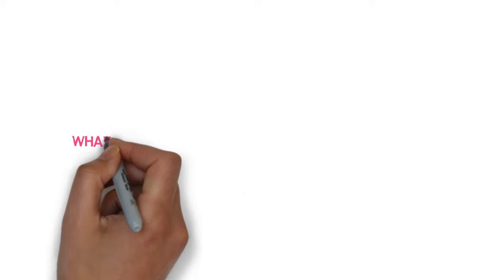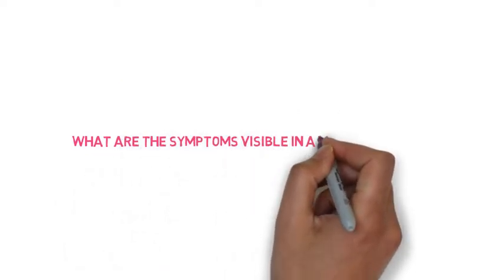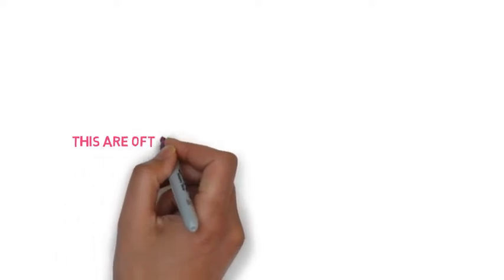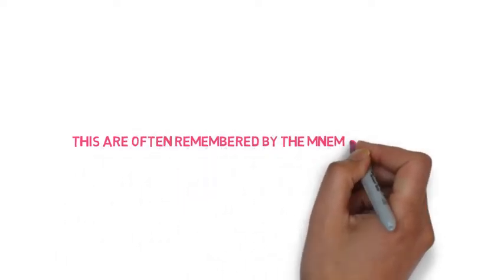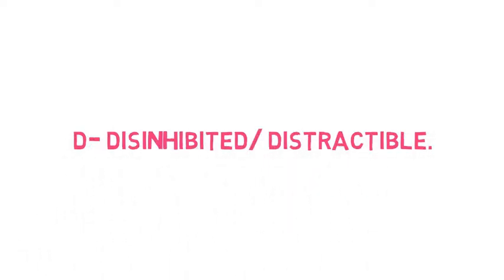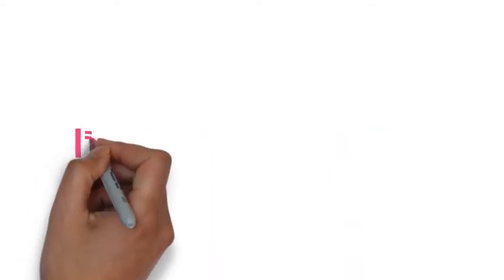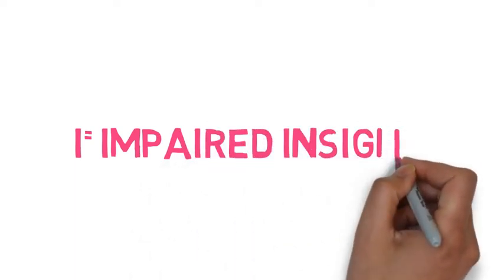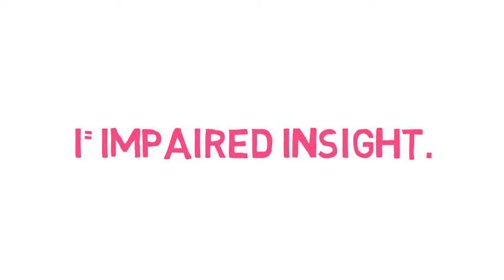What are the symptoms of a manic episode? These can be remembered by the mnemonic DIGFAST. A patient with mania is disinhibited and distractible. They may be flirtatious and sexually bold. They may engage in risky spending and appear very sociable and talkative. Someone with mania will have impaired insight — in psychiatry, insight means the ability to recognize one's mental illness. During a manic episode, a patient may think that nothing is wrong with them.